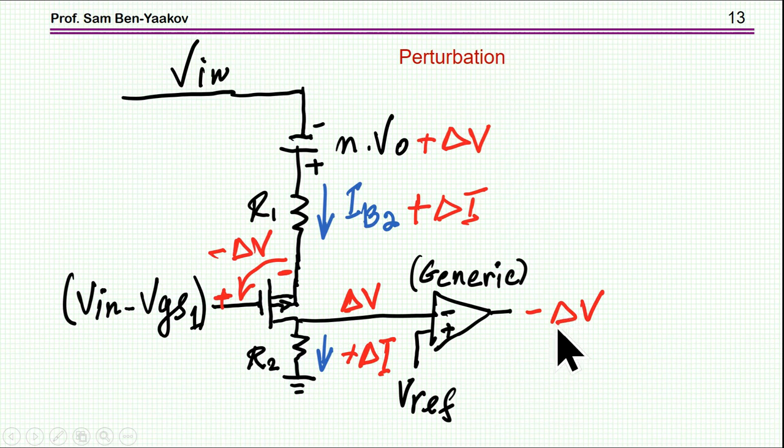which causes a negative output at the error amplifier, which will activate the modulator such that the duty cycle will become smaller, the effective duty cycle.